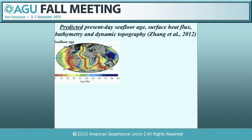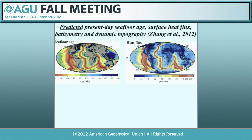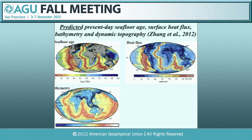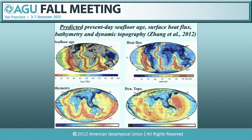With this model we can make predictions: we can compute the seafloor age distribution — the model prediction is very similar to observations. We can also predict heat flow and bathymetry. High-resolution models like this can predict a lot of observables very similar to what we see today. We can also compute the dynamic topography, showing two dynamic topography highs — one above the Pacific and another broadly above the African hemisphere.